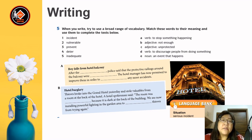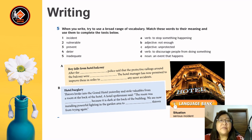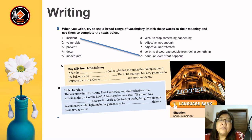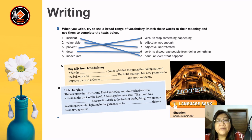Dear students, when you write, try to use a broad range of vocabulary. Match these words to their meanings: incident (noun) — an event that happens; vulnerable (adjective) — unprotected; prevent (verb) — to stop something happening; deter (verb) — to discourage people from doing something; inadequate (adjective) — not enough.